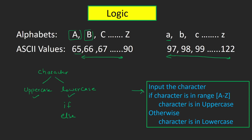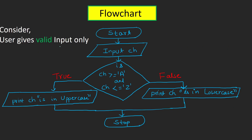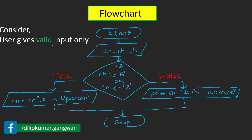We will input the character, then check whether it is lying in the range of capital A to capital Z. If yes, the character is uppercase; if not, we assume it is lowercase. Here I have assumed the user will always input a valid alphabet and will not enter any non-alphabet character. In the next flowchart we will also see how to handle the invalid case.